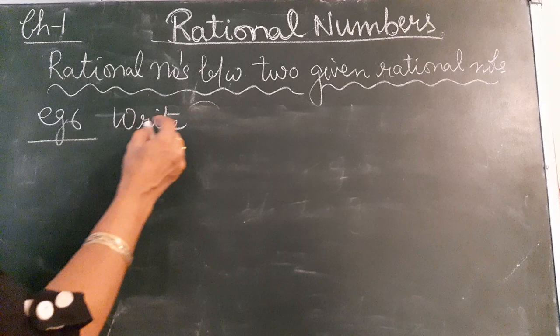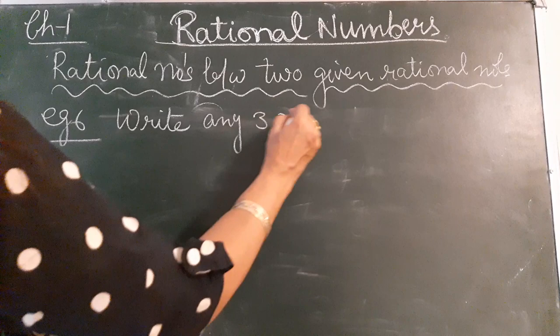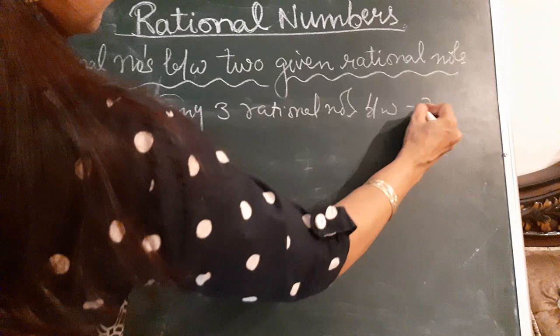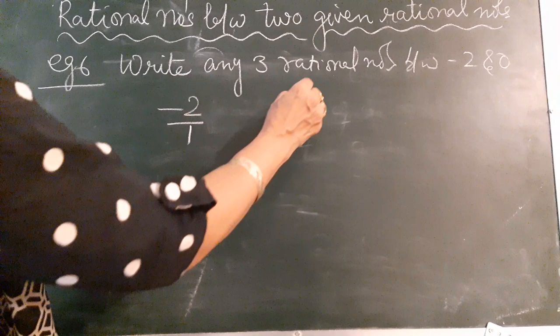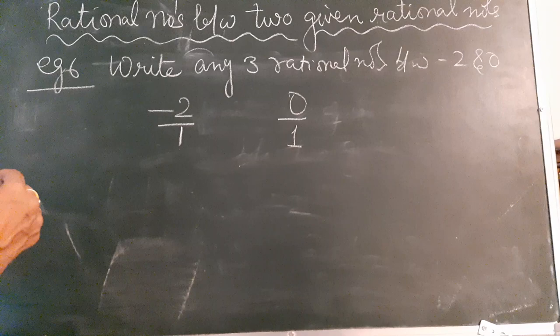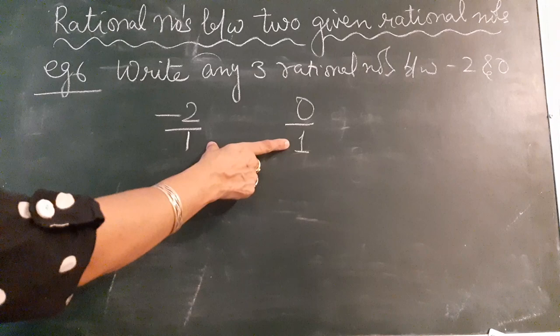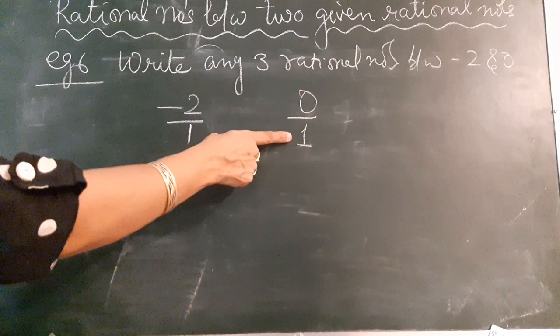Example 6 from your NCERT book: write any three rational numbers between minus 2 and 0. So minus 2 is a rational number, 0 is also a rational number. Write minus 2 in P/Q form as minus 2/1, and 0 as 0/1. In between, you might say there is only one number, minus 1/1, but we need to find three rational numbers.